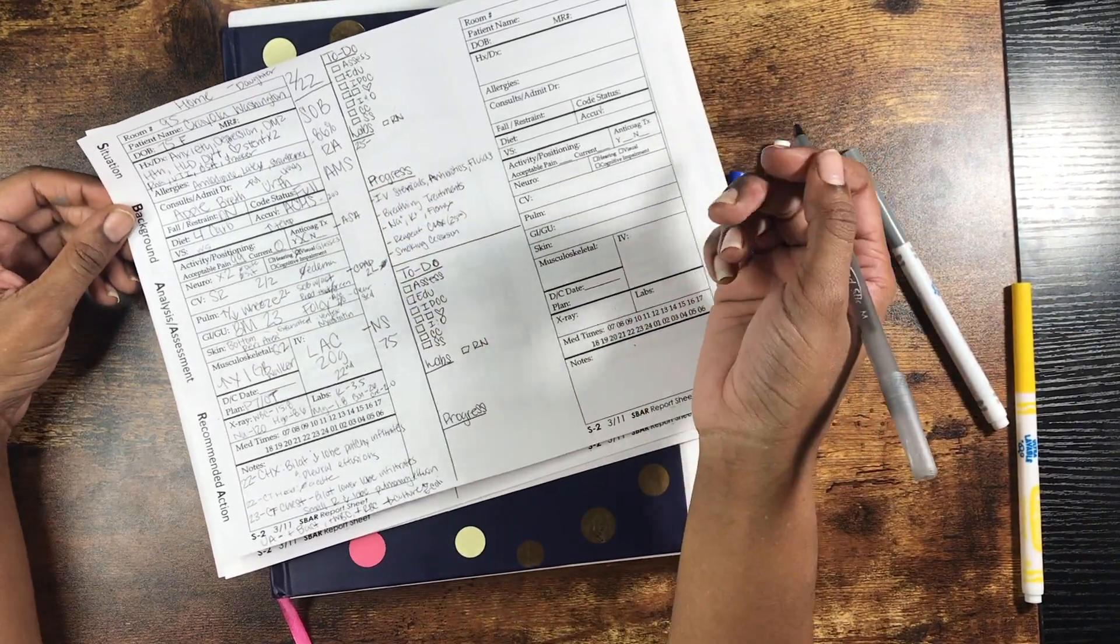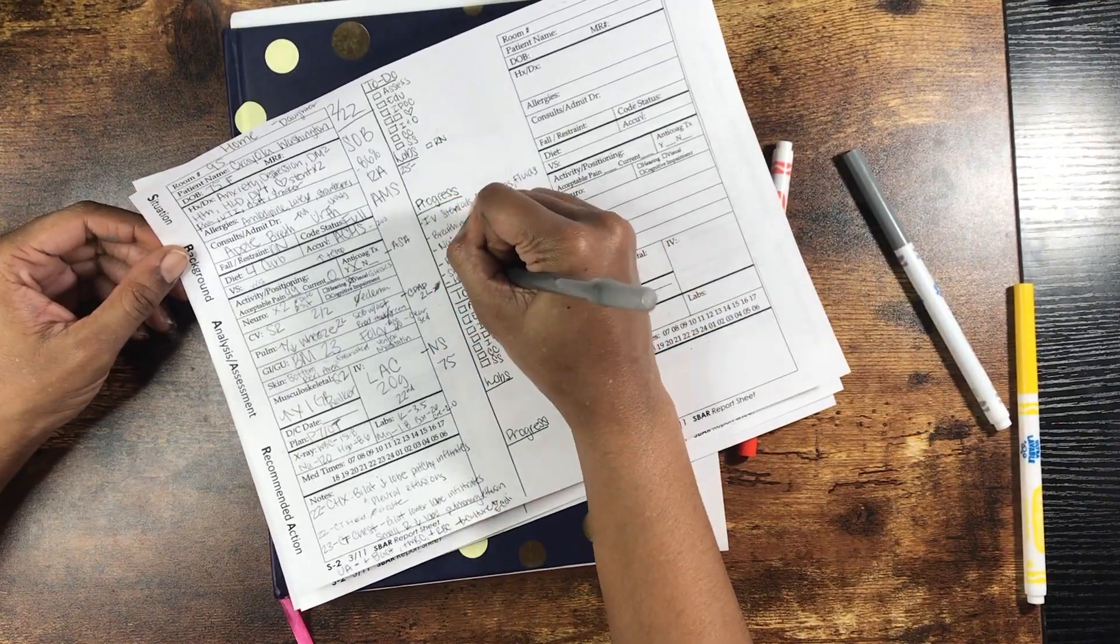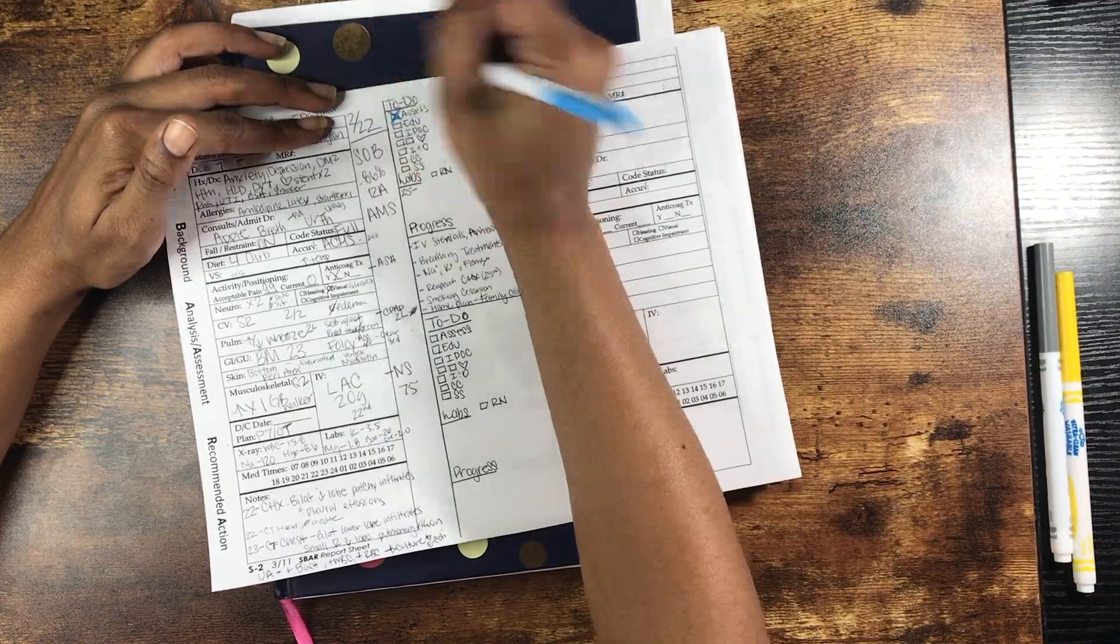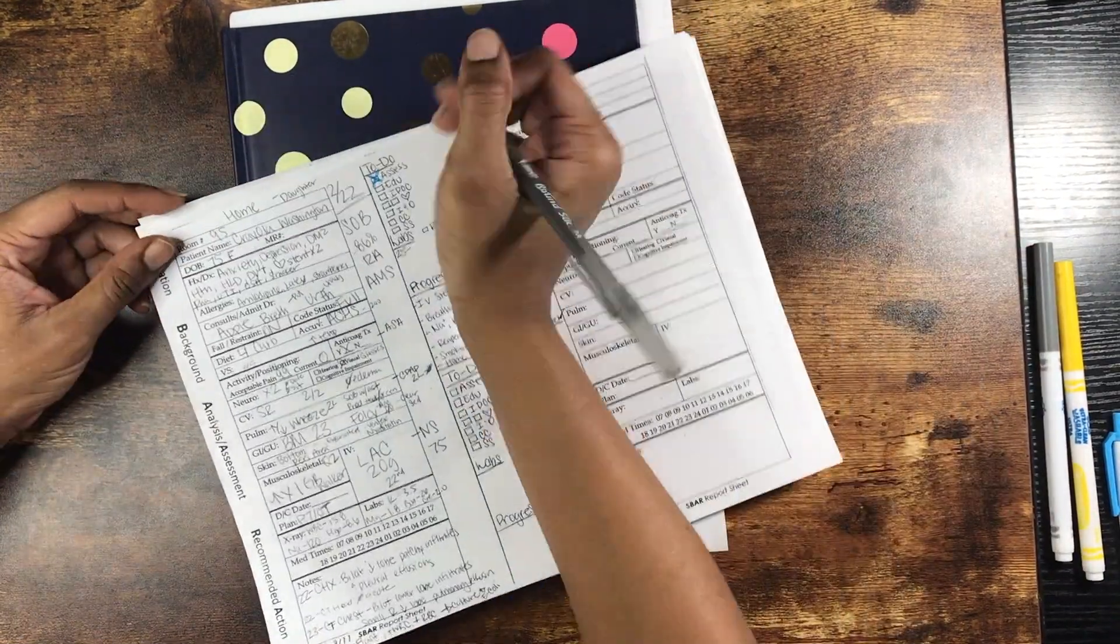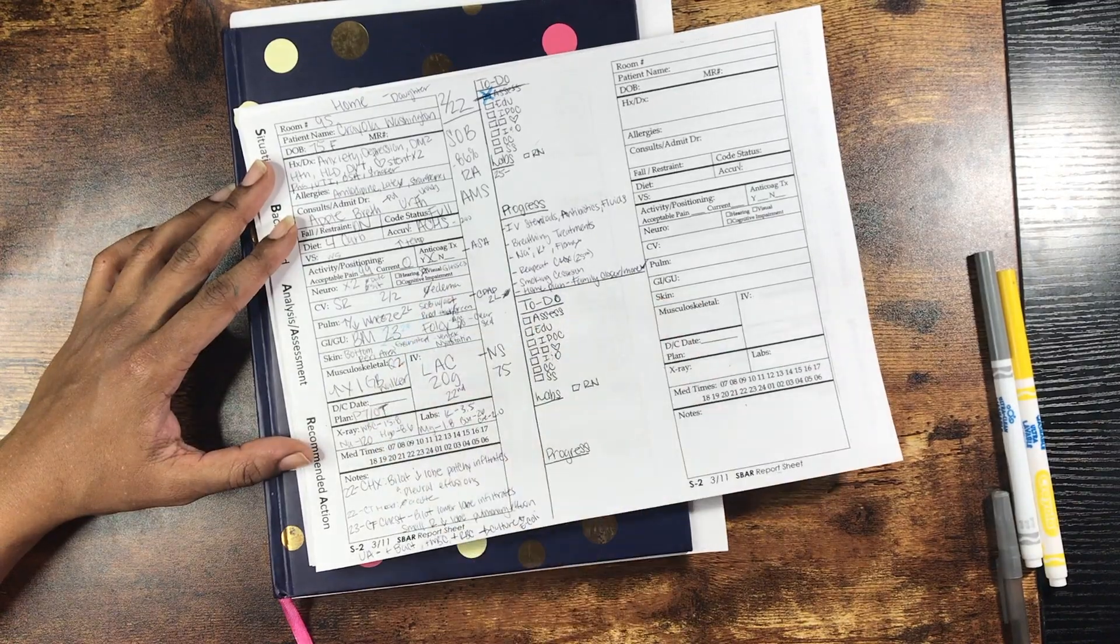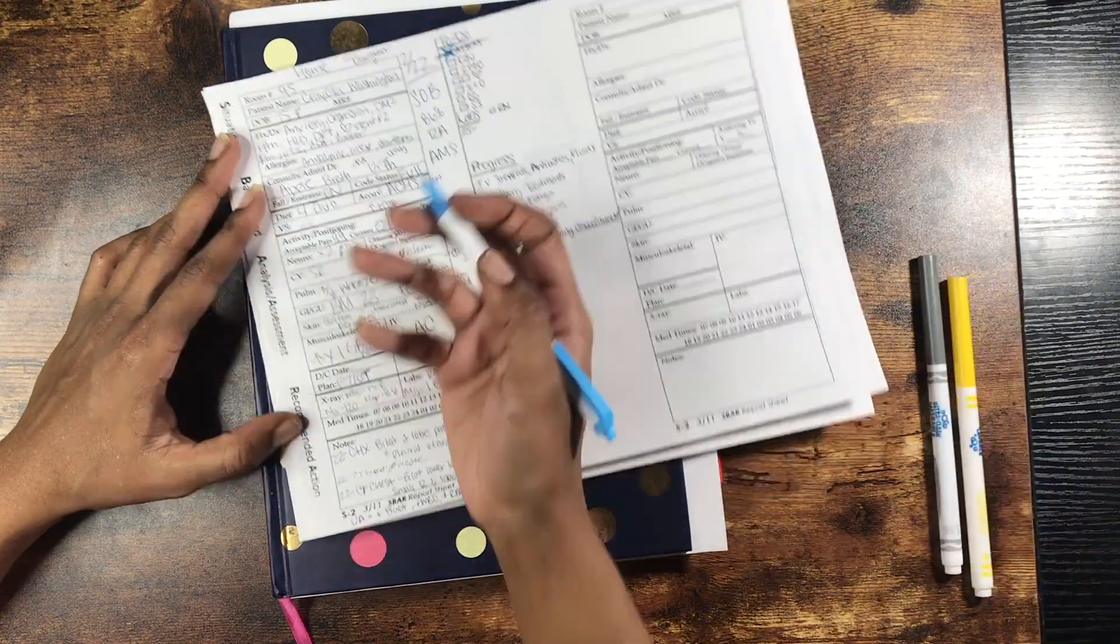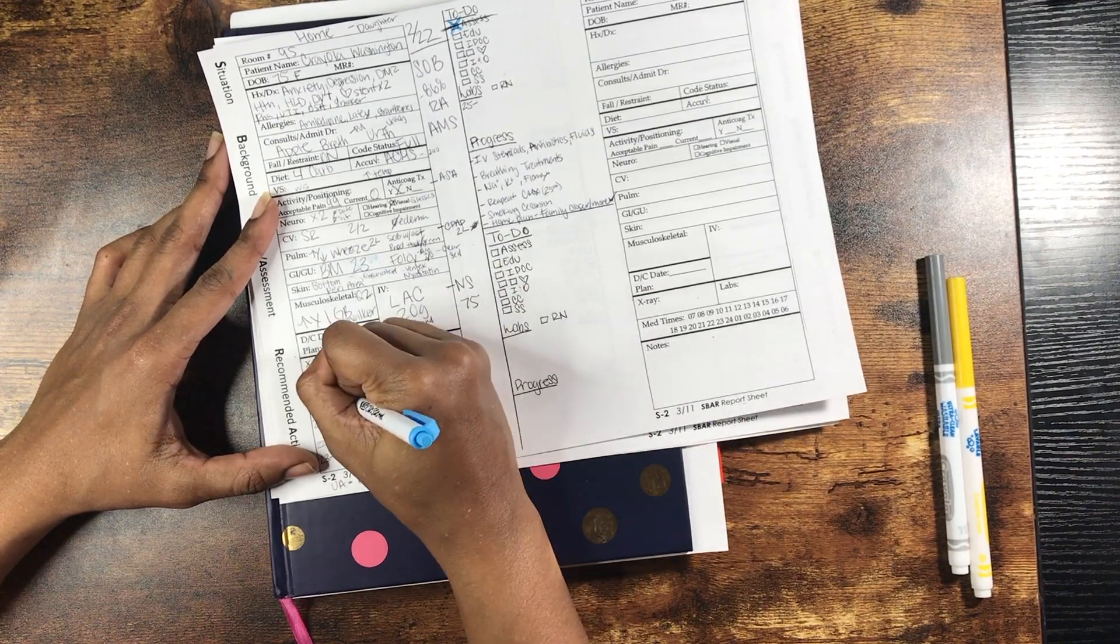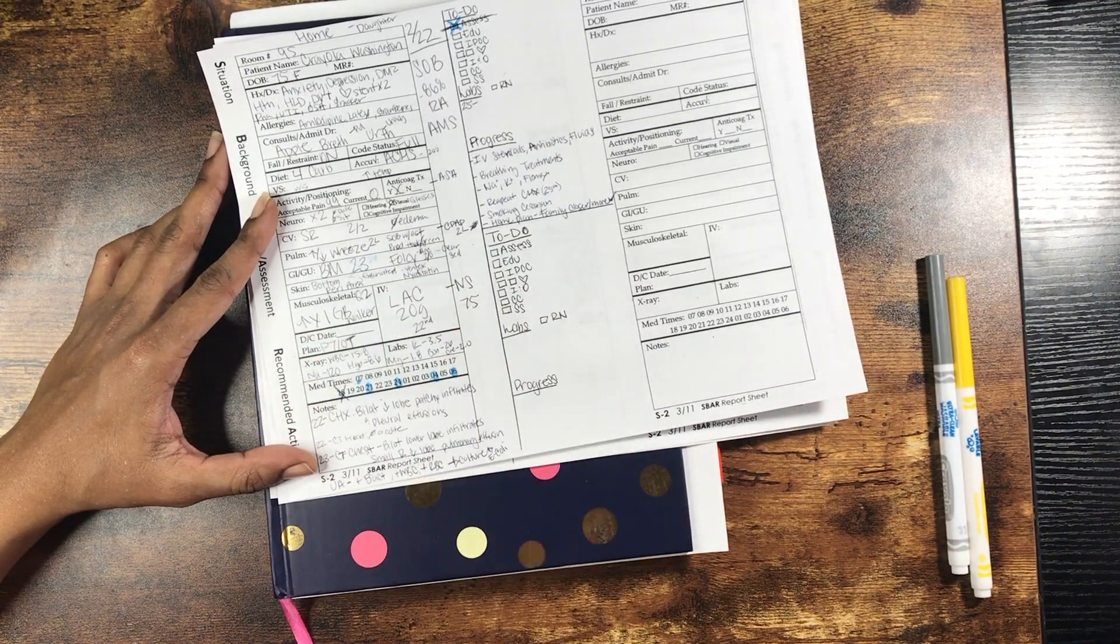So that is typically how a nursing report goes. I like to keep this paper for my next shift. So I'll use black for my first shift and then another color for updates. At the beginning of shift, I like to make sure I highlight my medication times and then cross them off as I go along. And I can use a different color for different days with that as well.